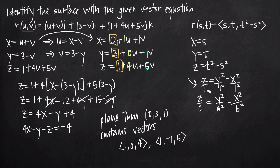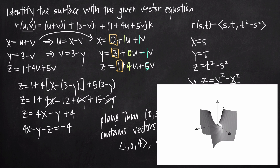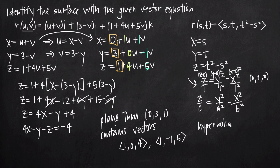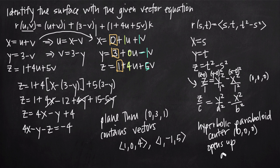Since our c value is positive 1, the hyperbolic paraboloid opens upward in the positive direction of the z-axis, just as shown in the picture. Because we have z minus 0, y minus 0 squared, and x minus 0 squared, this hyperbolic paraboloid is centered at the origin (0, 0, 0). To summarize: we have a hyperbolic paraboloid, centered at (0, 0, 0), that opens upward about the z-axis.